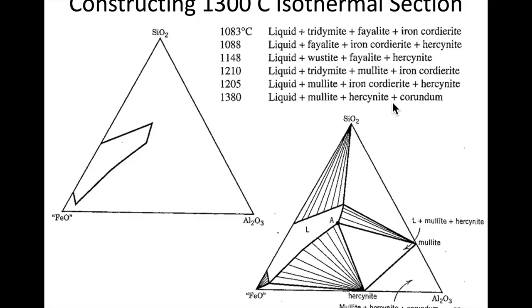This region would also appear as the compatibility triangle for those three components — it's just the triangle of those three components. This happens below 1380 degrees, because that's the critical temperature for that reaction. If you look at the guide for all the different critical temperatures, the first one going from highest to lowest is 1380, which corresponds to liquid plus mullite plus hercynite and corundum. So it makes sense that we see this at 1300 degrees, since we're below that critical temperature and we wouldn't expect liquid in this region.